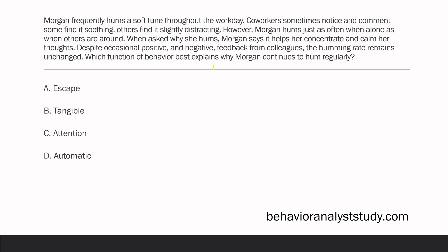Morgan frequently hums a soft tune throughout the workday. Coworkers sometimes notice and comment — some find it soothing, others find it slightly distracting. However, Morgan hums just as often when alone as when others are around. When asked why she hums, Morgan says it helps her concentrate and calm her thoughts. Despite occasional positive and negative feedback from colleagues, the humming rate remains unchanged. Which function of behavior best explains why Morgan continues to hum regularly?